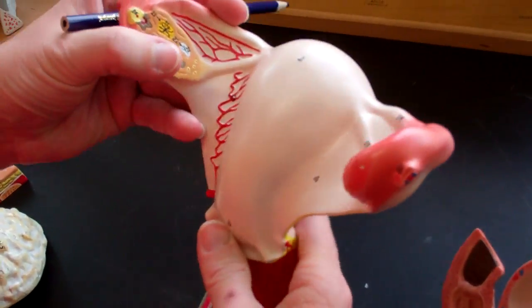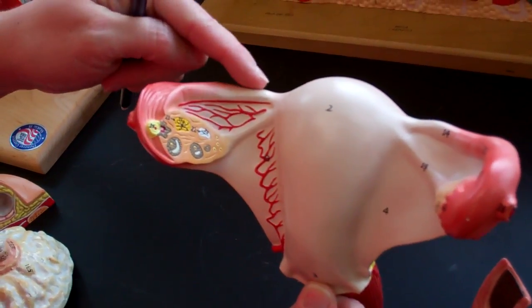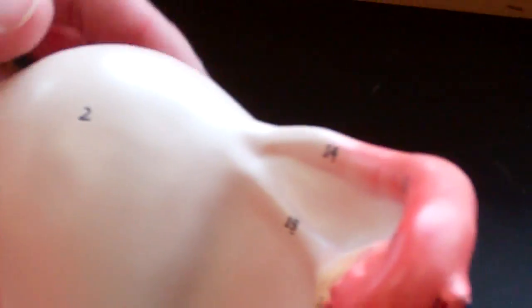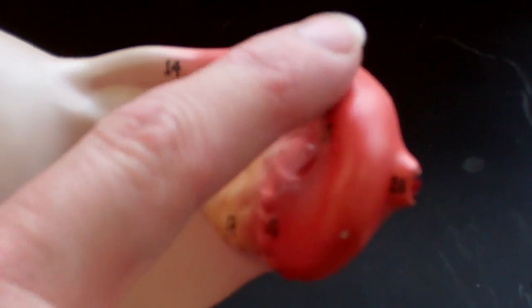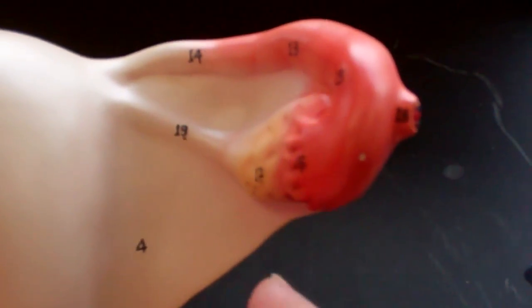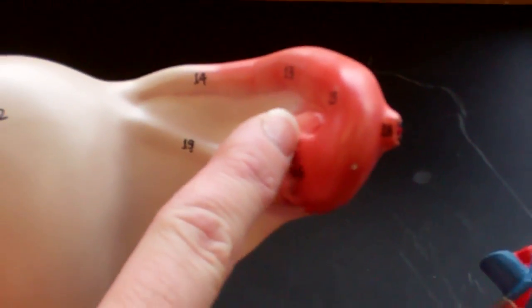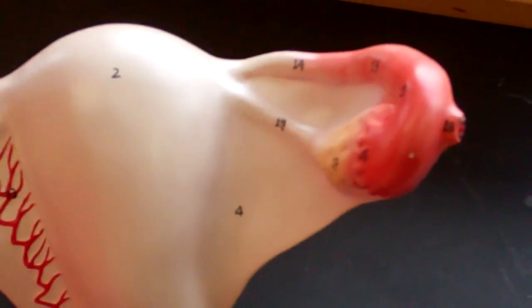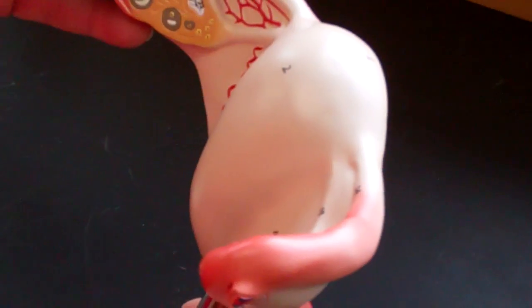Now I'm going to turn this around and you can see the uterine tubes on this one pretty well. And again, the infundibulum is essentially the bend and the ampulla is also in there. The fimbriae are the little fingers, finger-like projections. And then we have the ovary again.